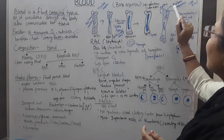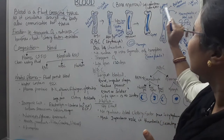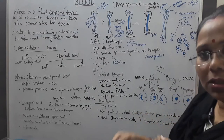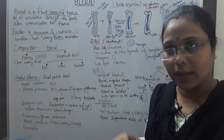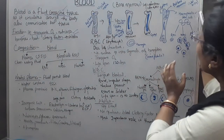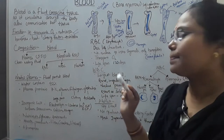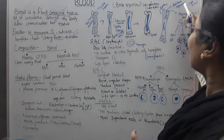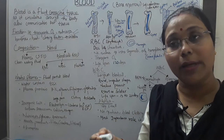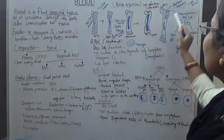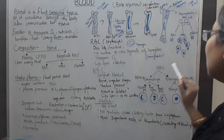Hematopoietic stem cells are present in the red bone marrow. Through different stages, they first develop into immature blood cells and then mature into matured blood cells. The entire process of producing blood cells from hematopoietic stem cells is called hematopoiesis. Every day, the red bone marrow produces 220 million blood cells.